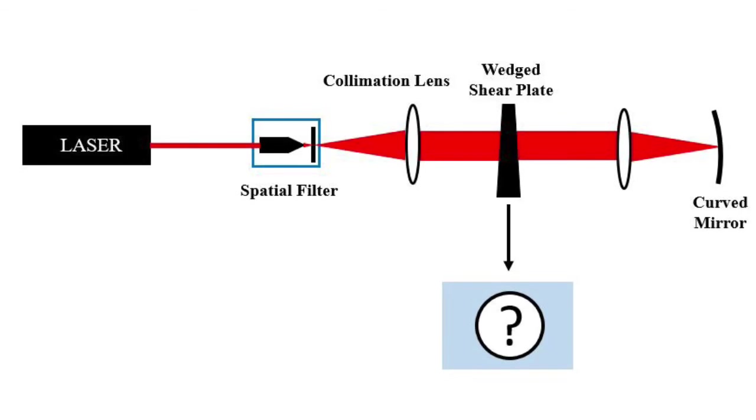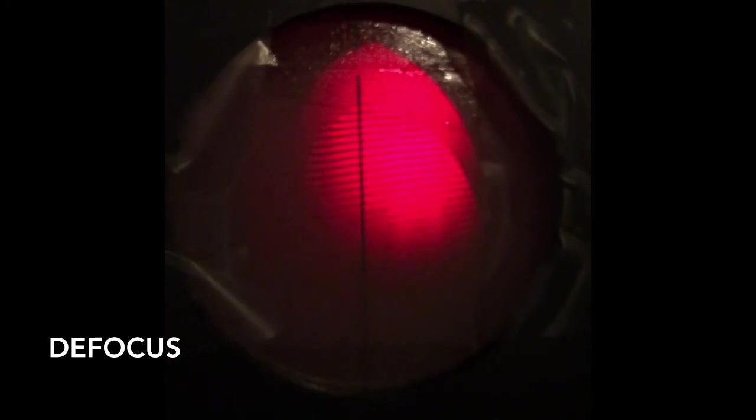Next, we altered the setup by adding a 300 millimeter reference lens to focus the light onto a curved test mirror. We were then able to test the aberrations of the test mirror by placing the shear plate in between the reference and the collimation lenses in order to test the quality of the collimation coming back through the reference lens.